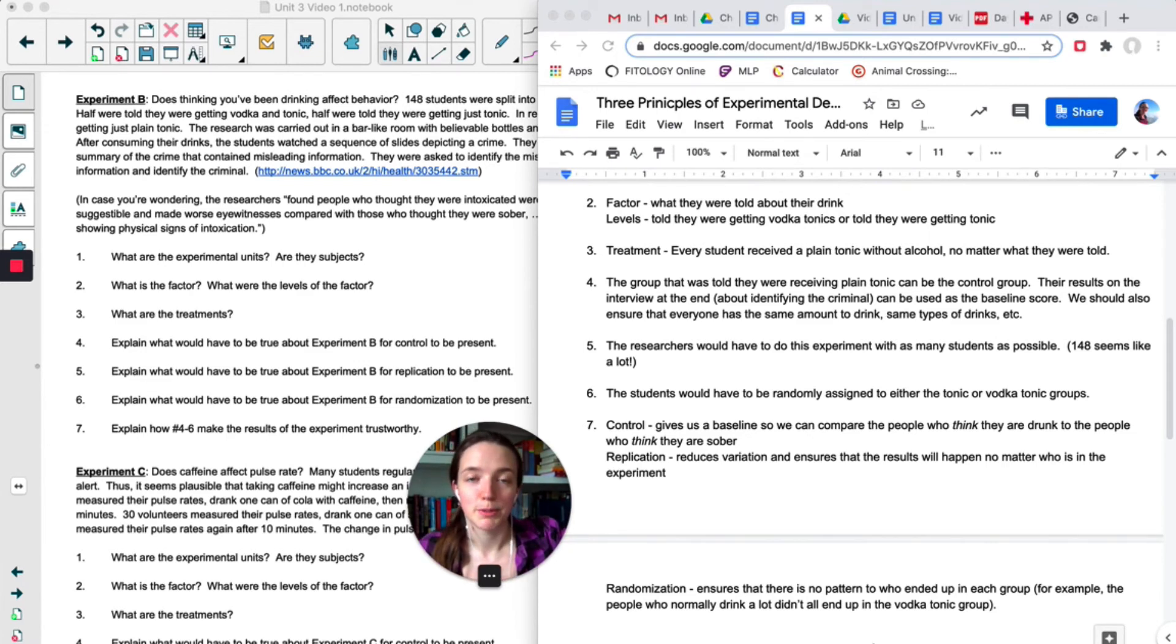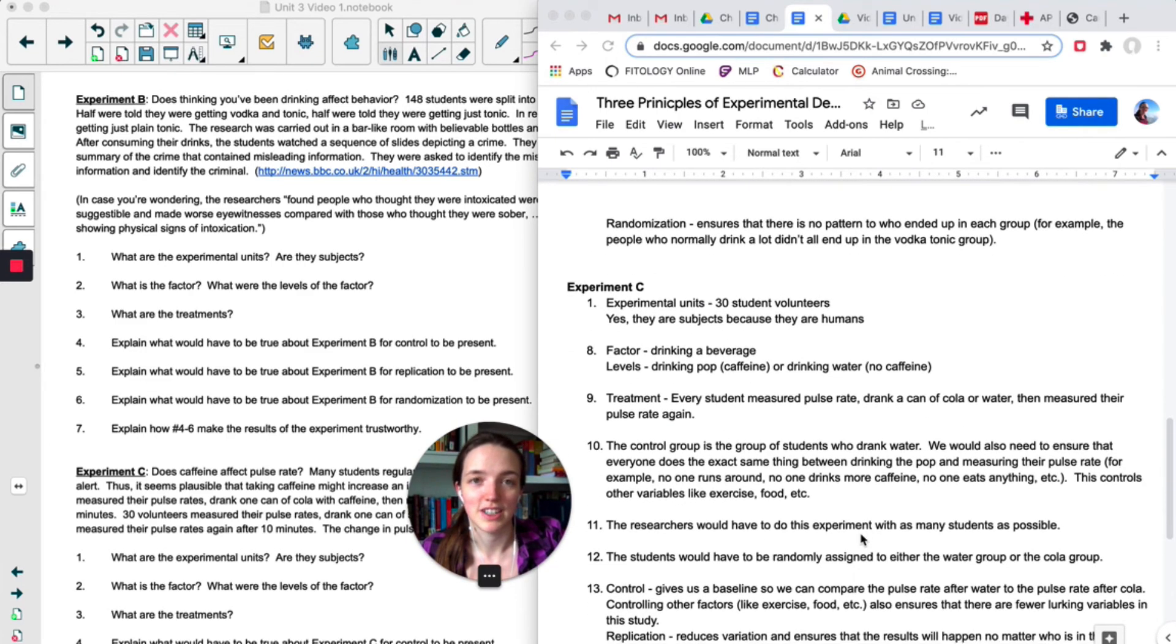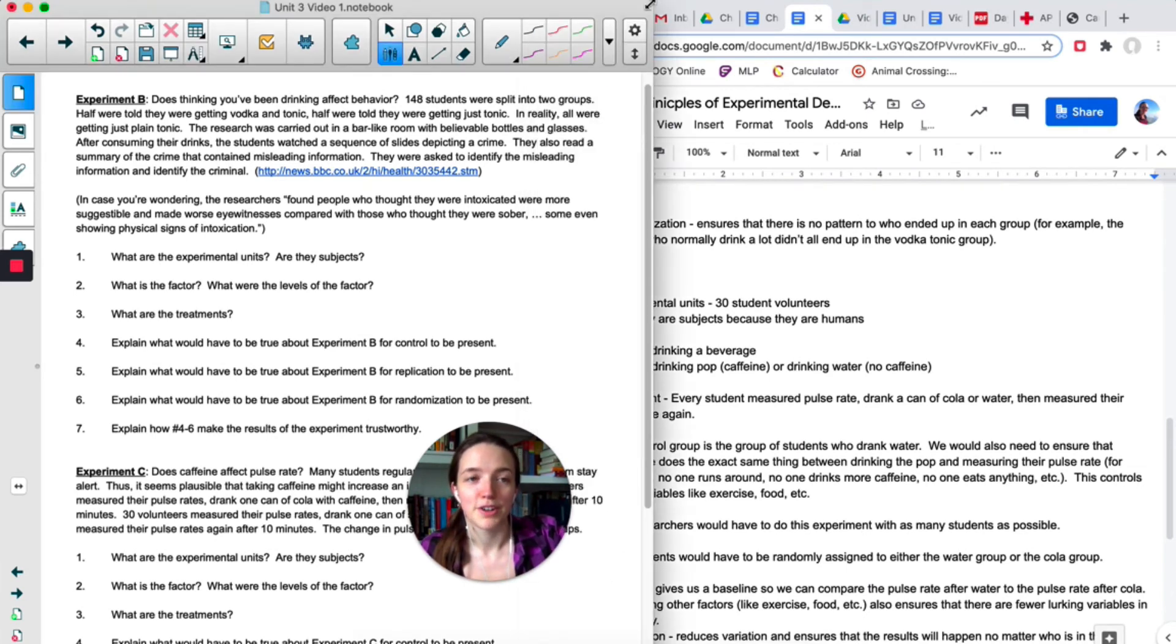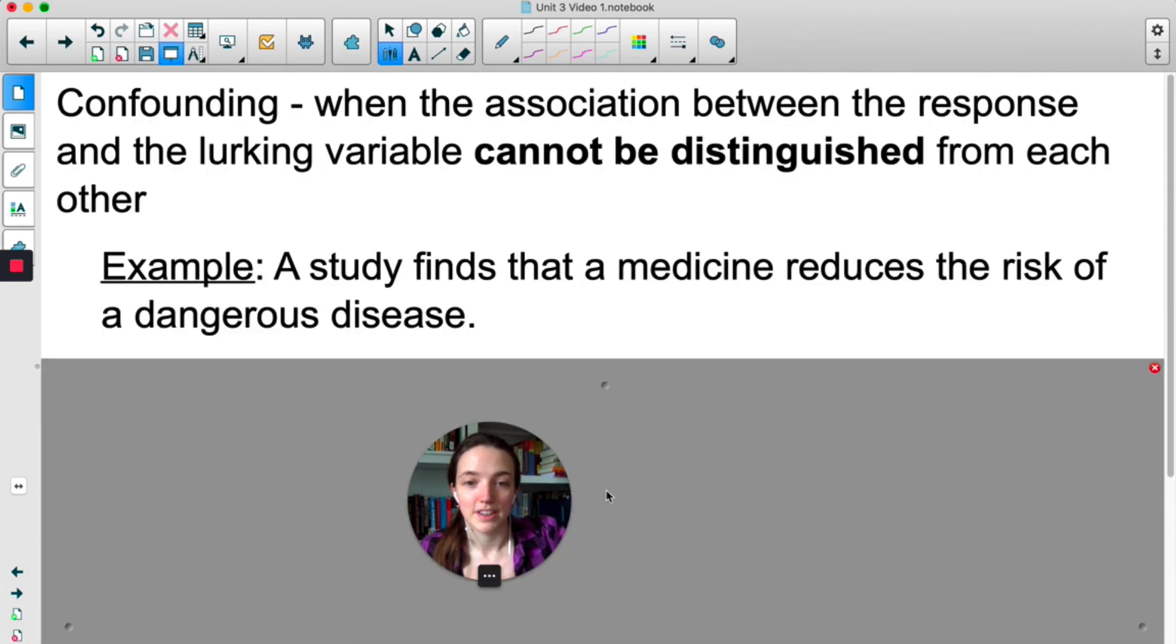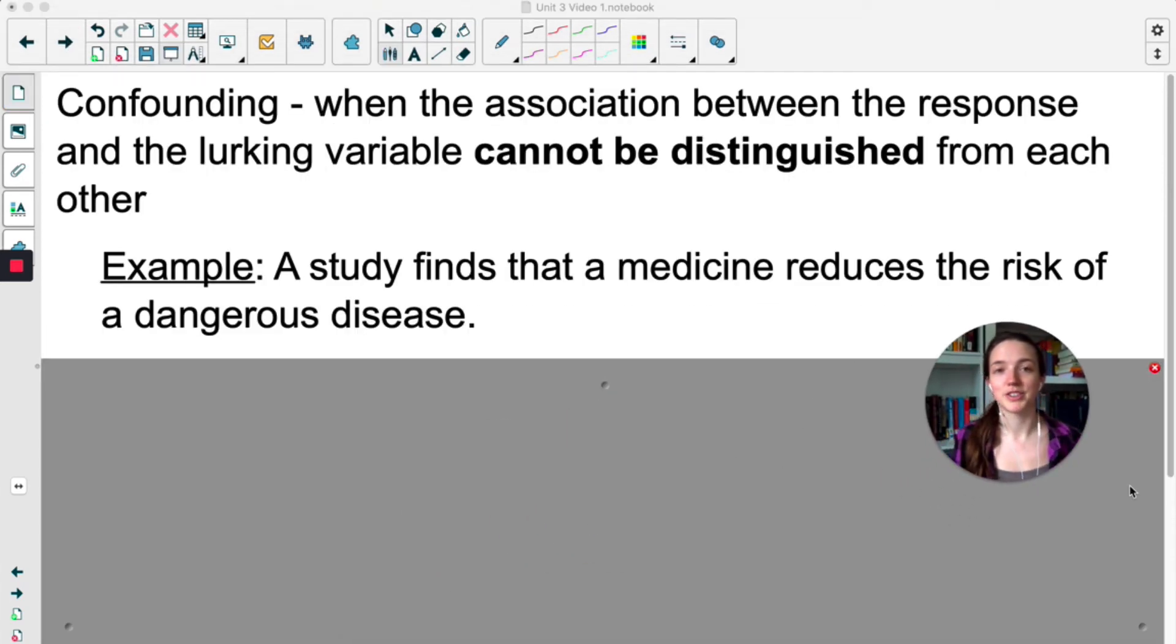So if you'd like to do Experiment C, I will post this answer key in the video description so that you can do that as extra practice. But for now we are going to quickly talk about the lurking variables that I was just mentioning. So a lurking variable is a variable that is lurking dramatically in the background that you don't intend to study but might accidentally influence your response. Confounding happens when the association between the response and the lurking variable cannot be distinguished.